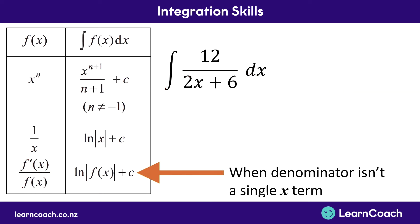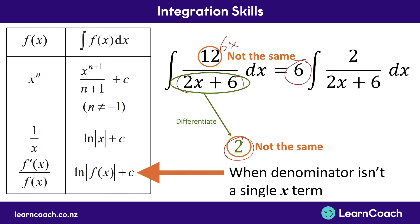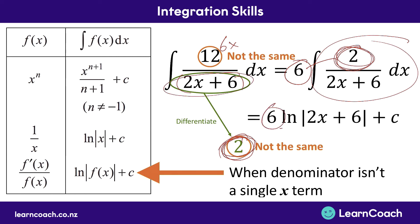Sometimes it doesn't work out perfectly. For example, with 12 divided by 2x plus 6: we differentiate the bottom and get 2, but that's not the same as 12 on the top — in fact, 12 is 6 times bigger than 2. So we multiply the outside of the integration by 6, because 6 times 2 equals 12. Now what's on the top matches what we differentiated from the bottom, so we keep the 6 out the front and write log of whatever's on the bottom of the fraction, plus c.